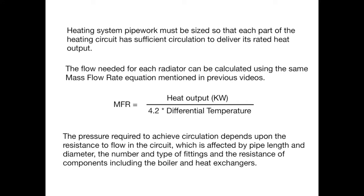One of the biggest challenges that we as heating engineers often encounter is the problems arising from incorrect pipe sizing. This leads to insufficient circulation, which in turn means that our radiators won't deliver the same rated heat output specified by the manufacturer.